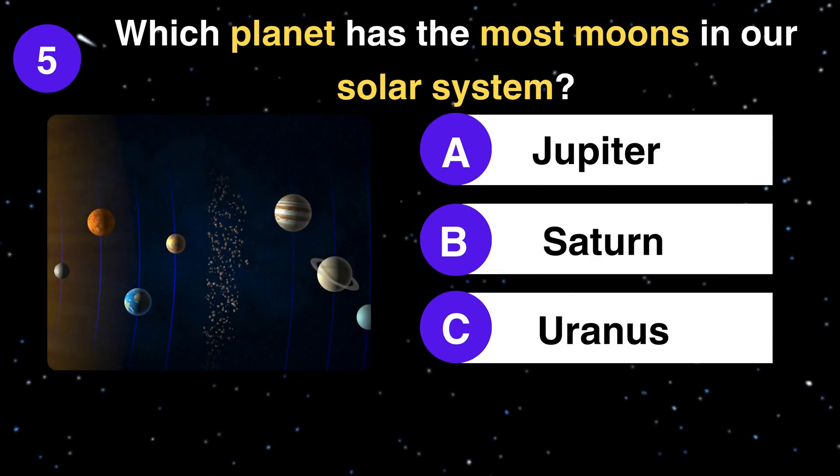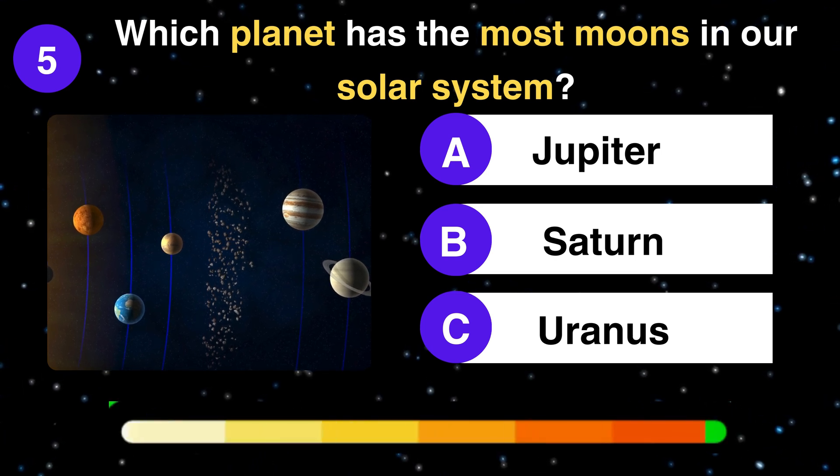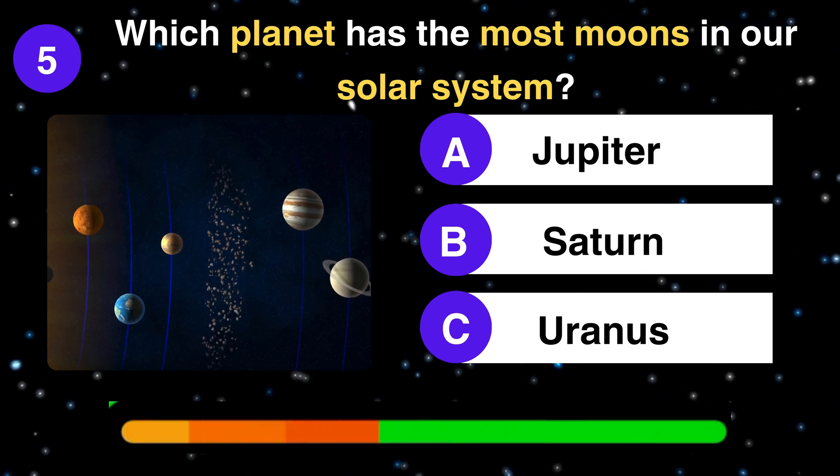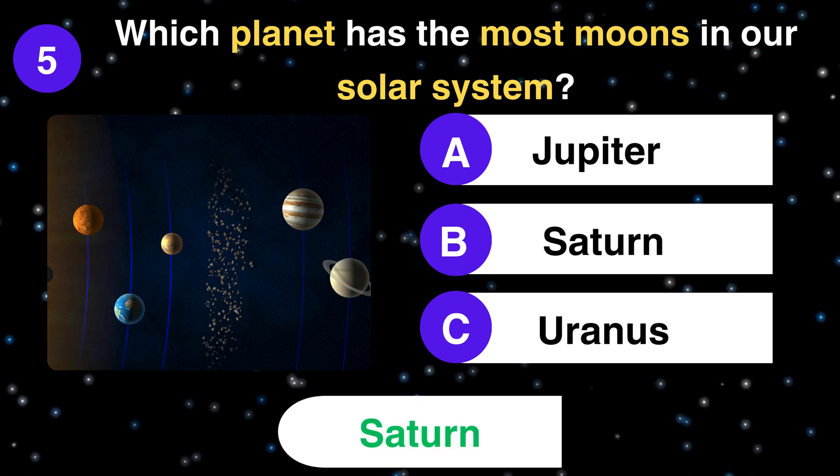Which planet has the most moons in our solar system? Jupiter, Saturn, or Uranus? Saturn.